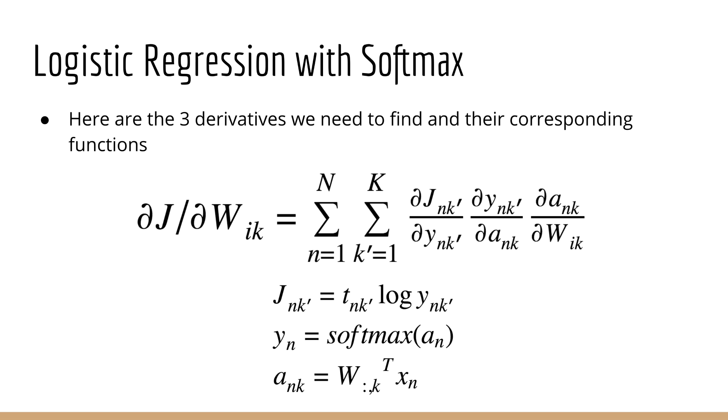Now that the hard part is done, we can go back to our expression for the gradient of the objective. We have these three derivatives which we need to find. Luckily, we already know the derivative for the softmax and the other two are pretty easy.